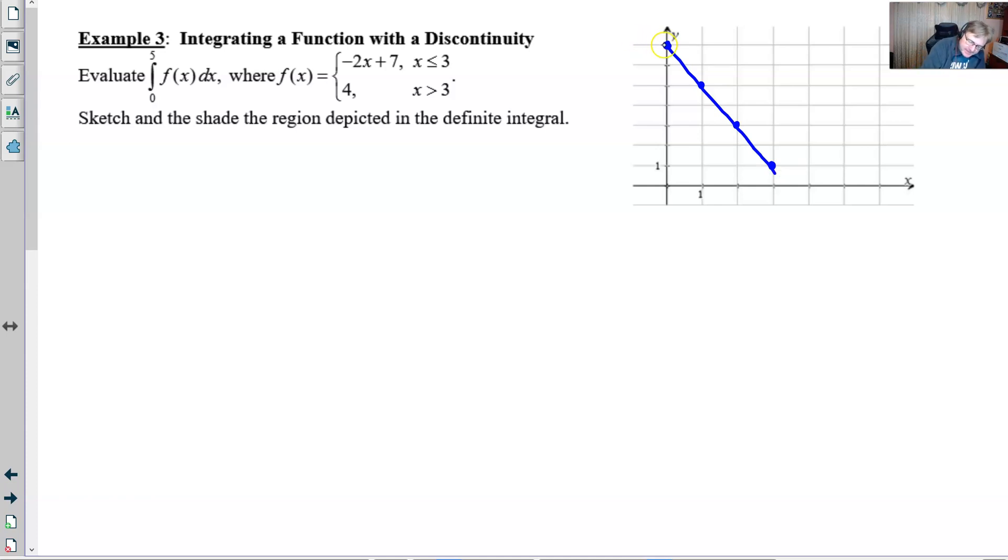Now yes, this graph would continue in this direction and that's perfectly fine if you want to make it do that, but we're not going to consider any of this region when we find our area because the lower boundary of the function is zero.